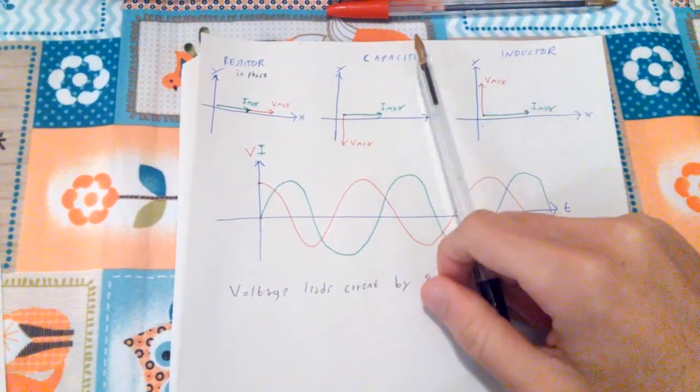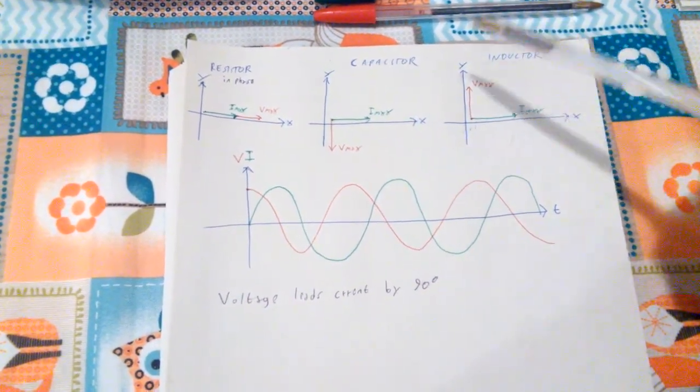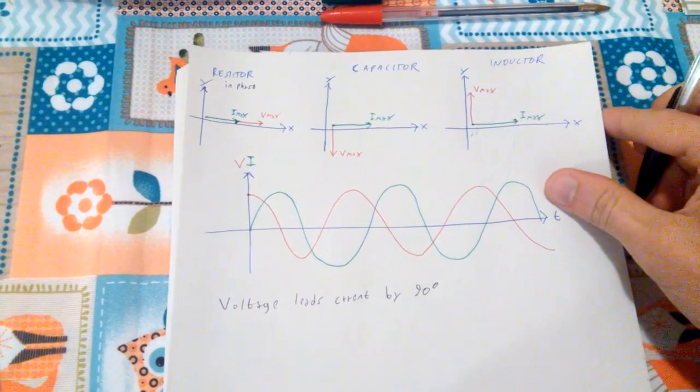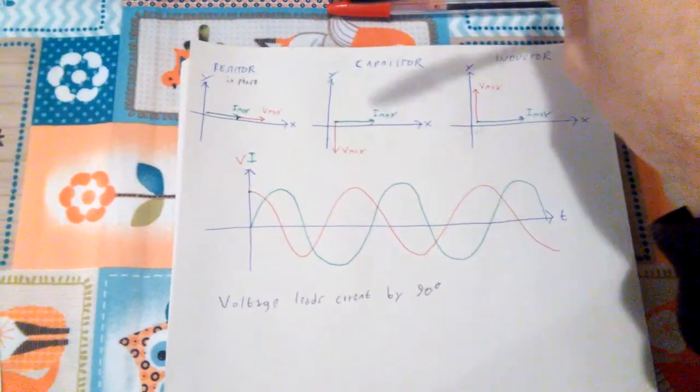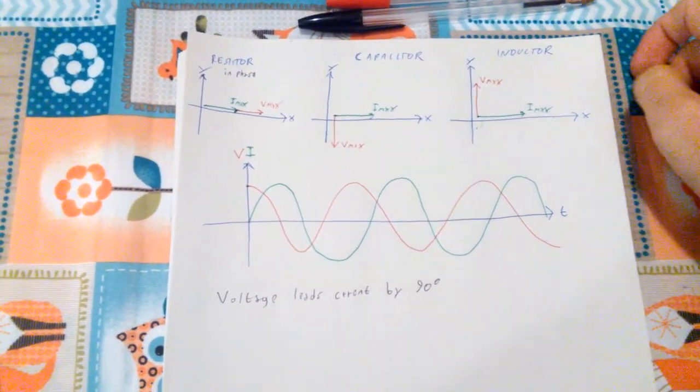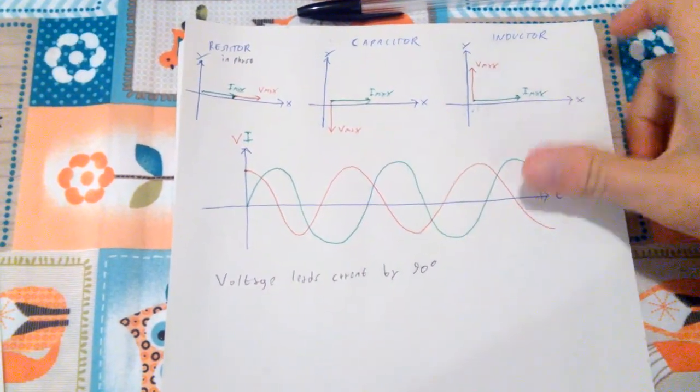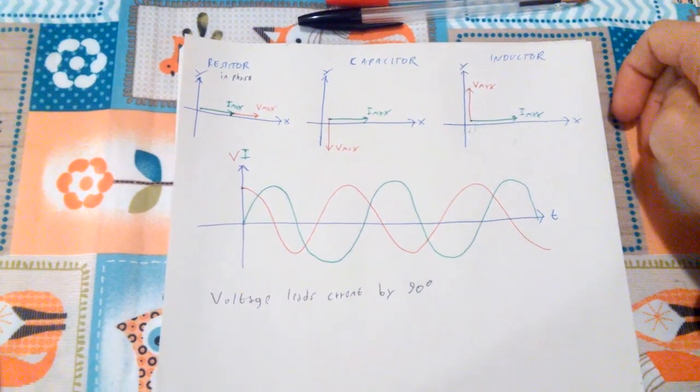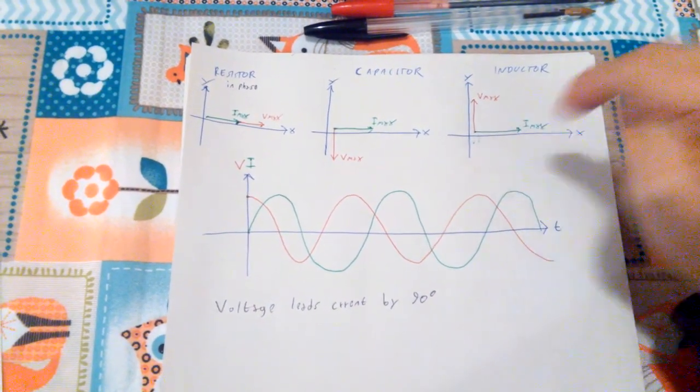So essentially, capacitors are just the opposite of inductors, or you can think about inductors as the opposite of capacitors. So yeah, that's ways to think about them. Whenever you are in AC, and you think about resistors, capacitors, inductors, you also got to make sure that you got to keep in mind what's going to happen. And you got to keep in mind about phasors.